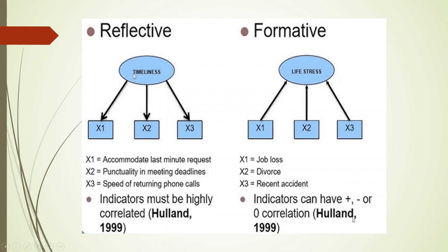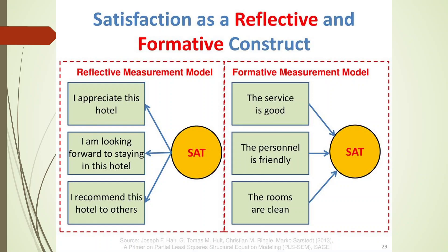If I talk about reflective: timeliness is a construct represented by x1, x2, and x3 — that is, accommodating last-minute requests, punctuality in meeting deadlines, and speed of returning phone calls. According to Hulan, all these statements are necessary to be exhibited to show that a person is time-oriented. Similarly, if a person is satisfied, the characteristics they exhibit as consequences are reflective: 'I appreciate this hotel,' 'I am looking forward to staying in this hotel,' 'I recommend this hotel to others.' These are more consequences-oriented and therefore reflective statements.